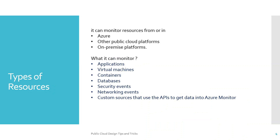Azure Monitor can monitor resources from Azure in the public cloud, from other public cloud platforms, and from on-premise platforms — those are the three sources. What it can monitor includes applications, VMs, containers, databases, security events, network events, and custom sources that use APIs to get data into Azure Monitor.